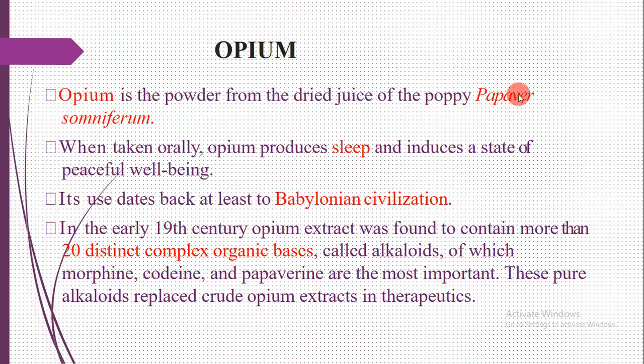Opium is a powder from the dried juice of the poppy plant, Papaver somniferum. When taken orally, opium produces sleep and induces a state of peaceful well-being. Its use dates back at least to Babylonian civilizations.